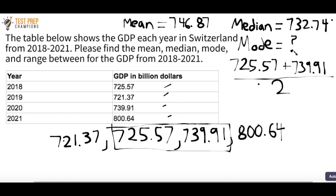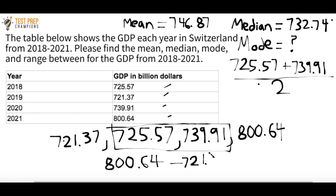For the range, many test takers learn mean, median, and mode but forget the range. It's simple: pick out the biggest number in the data set — 800.64 — and the smallest number — 721.37 — and subtract. Biggest minus smallest gives you the range. The range here is 79.27. To recap: mean — add all numbers, divide by count; median — order smallest to largest, find middle (or average the two middle numbers if even count); mode — most occurring number; range — biggest minus smallest.